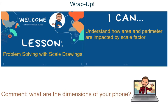Alright guys, that's it. If you made it to the end of this video, please put in the comments what are the dimensions of your phone. Mine gives three numbers because it's 3D — length, width, and height — but I'm more interested in the two bigger numbers. Mine is about 5.44 times 2.64. Today we learned about problem-solving with scale drawings, so now you should be able to understand how area and perimeter are impacted by scale factor. Go back to the calendar and complete any other assignments. Bye!